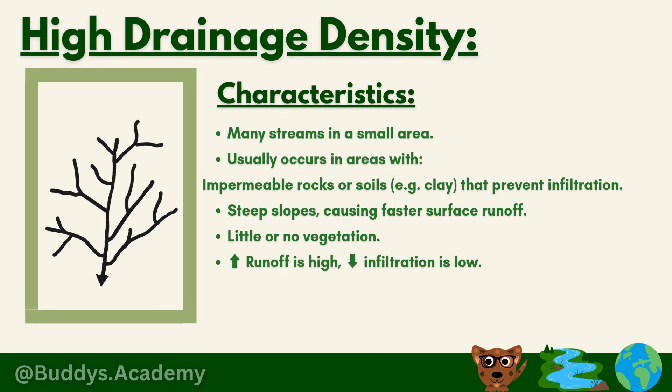In high drainage density areas, there's going to be little or no vegetation — think deserts or rocky areas. Without plants there's nothing to slow the water down, so it runs off quickly and causes more streams to form. If runoff is high — a lot of water flowing on the surface — then infiltration is going to be low, meaning very little water soaks into the soil. To reiterate: if there's a lot of water flowing on the surface, very little water soaks into the ground, so runoff is high and infiltration is low.